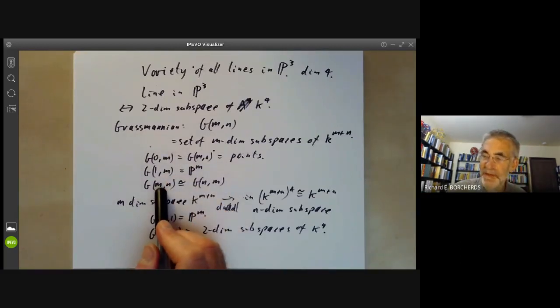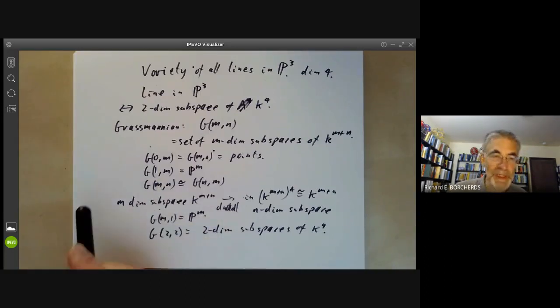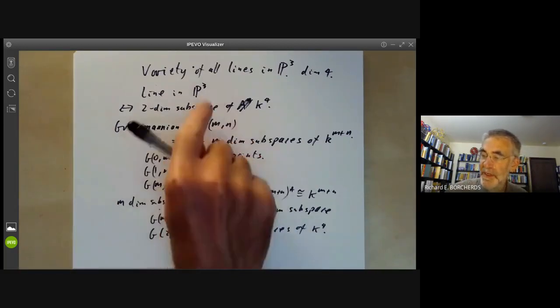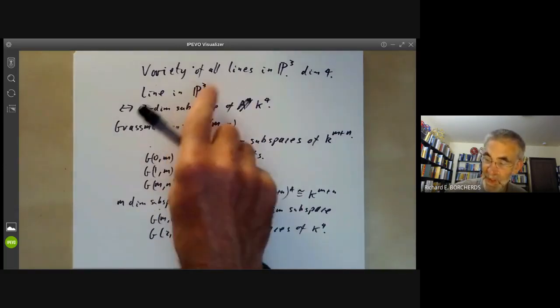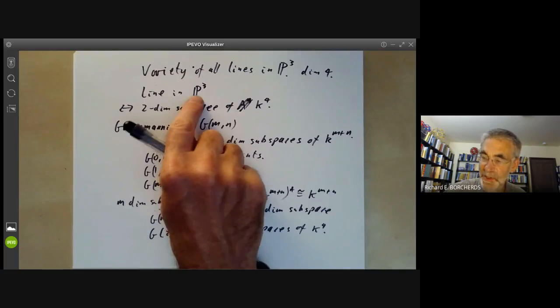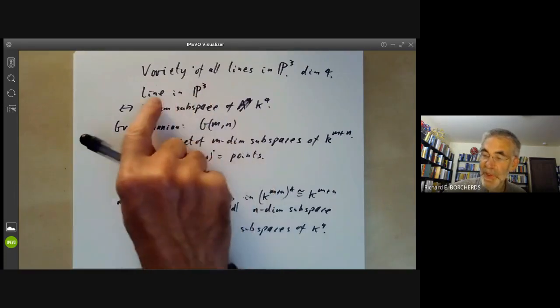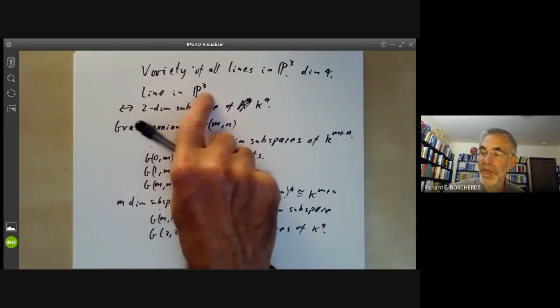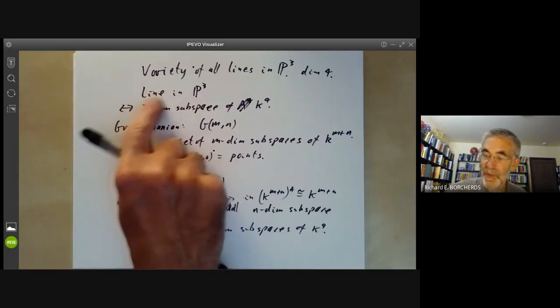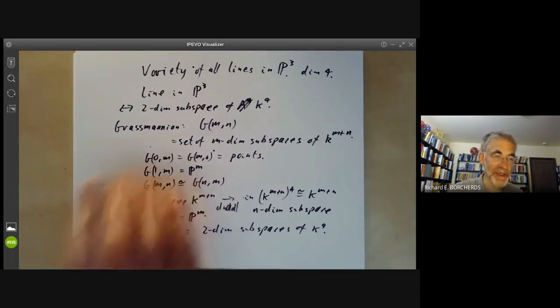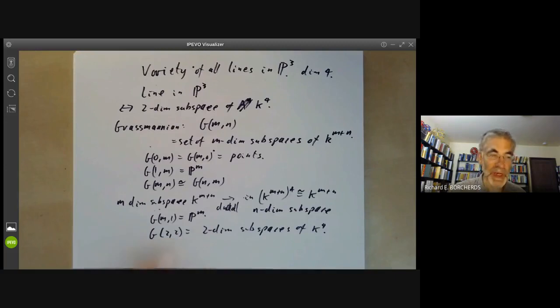In general, Grassmannians are special cases of Hilbert schemes. A Hilbert scheme is a scheme which is a generalization of a variety we will discuss later, whose points correspond to certain configurations such as algebraic sets or more generally subschemes of projective space satisfying certain conditions. The simplest condition is that it should be a linear subspace of projective space such as a line or a plane or something like that. So Grassmannians are the simplest cases of Hilbert schemes and G2,2 is the simplest non-trivial example of a Grassmannian.